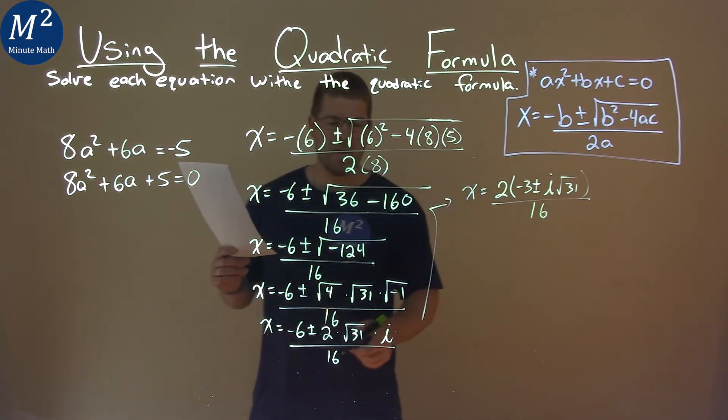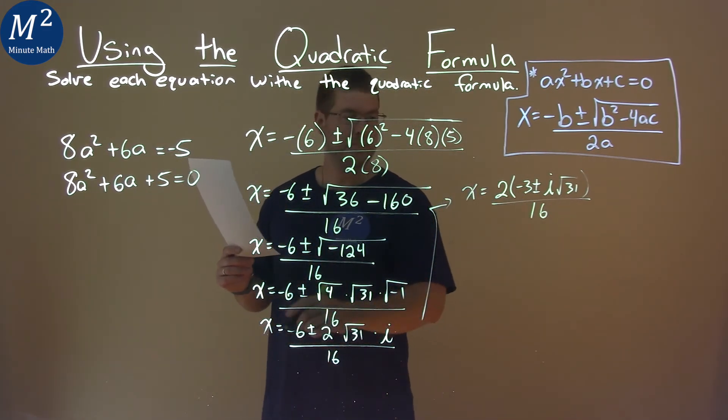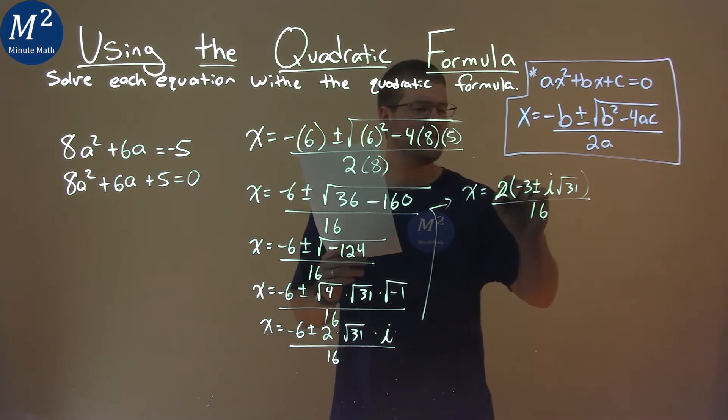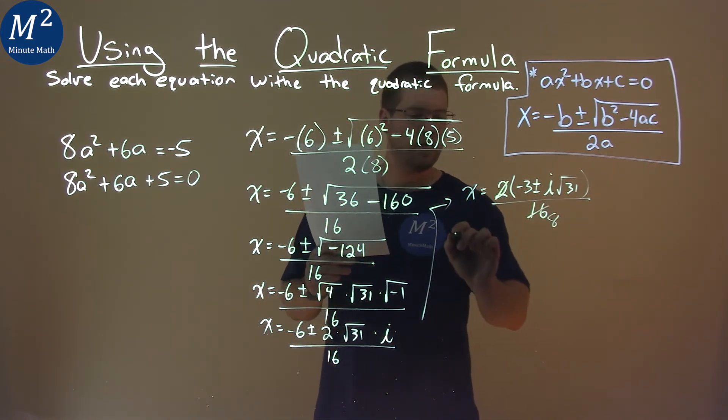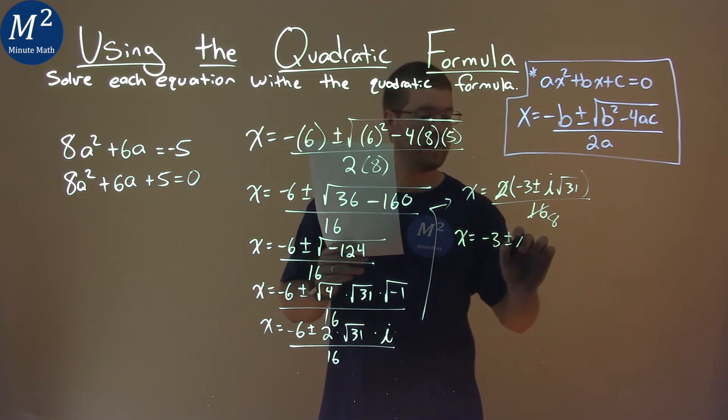See, I pulled that 2 out of both parts. Now, 2 goes into 16, we have 8 here. So we have x equals negative 3 plus or minus i square root of 31 over 8.